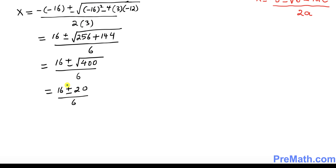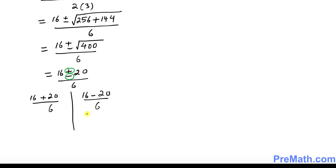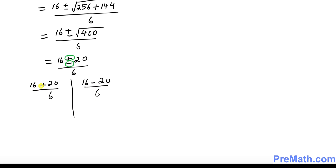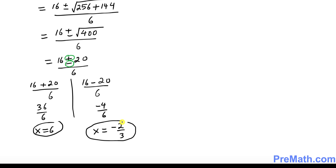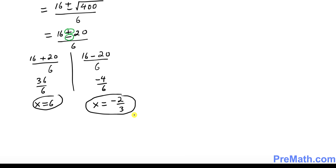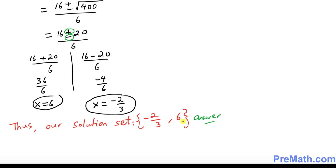Now we're going to split this up along the two signs, positive and negative. First is going to be 16 plus 20 divided by 6. The other is going to be 16 minus 20 divided by 6. On the top, 36 over 6 gives x equal to 6, which is one of our solutions. On this side, negative 4 over 6 reduces to x equal to negative 2 thirds. Hence our solution set turns out to be negative 2 thirds and 6.